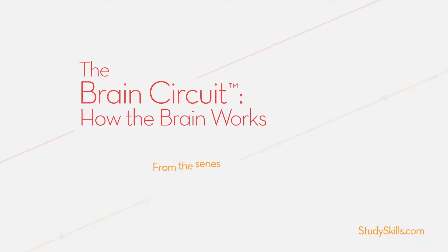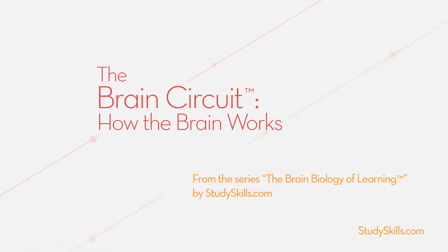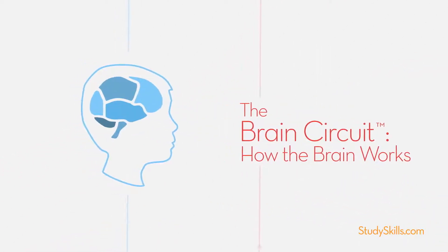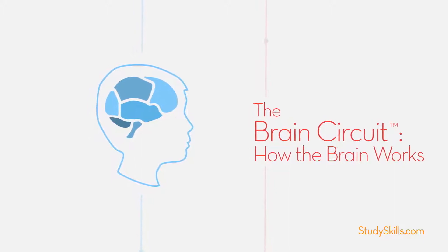The Brain Circuit: How the Brain Works. The brain has dozens of different sections. Each section does something different to help us move and process thoughts.